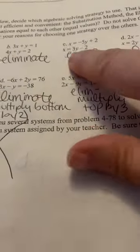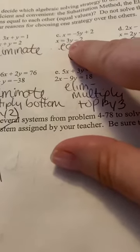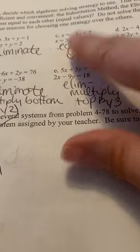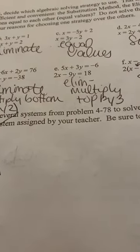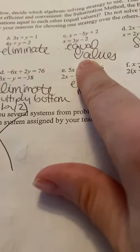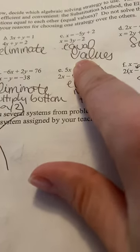For c, if x equals this and x equals this, maybe you could go ahead and do elimination if you wanted. But to me, it's just easy to set those two together and solve it with the equal values method.